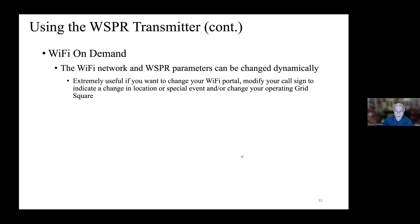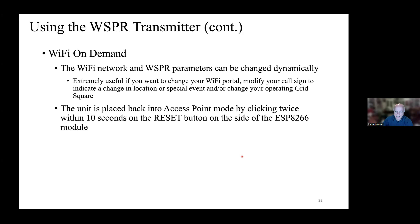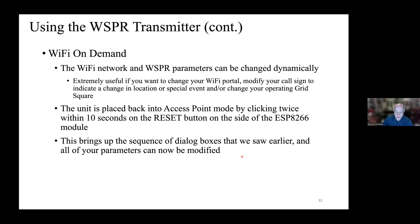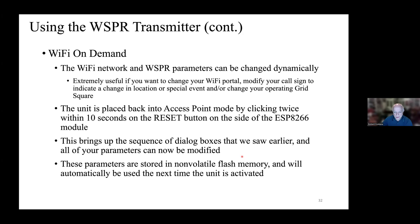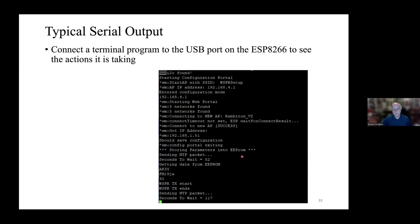The Wi-Fi on demand feature allows the Wi-Fi network and WSPR parameters to be changed dynamically. If you're traveling, at a hotel, in a different grid square, or need a different Wi-Fi network, double-click the reset button on the microcontroller. This brings up the Wi-Fi on demand dialog box. You enter the new network and call sign information, and all of it is stored in non-volatile flash. The next time you turn the rig on, it goes right back to those saved parameters.